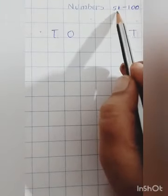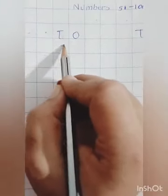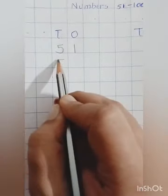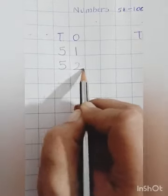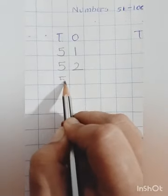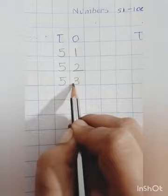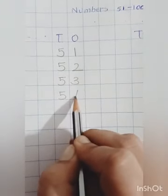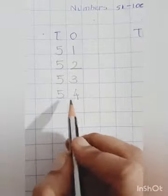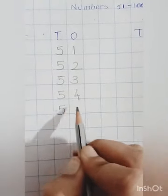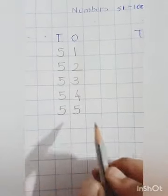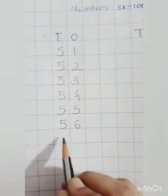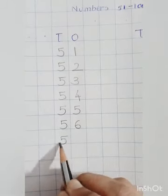We have to start writing from 51. So, here we will write 5, 1, 51. 5, 2, 52. 5, 3, 53. 5, 4, 54. 5, 5, 55. 5, 6, 56.